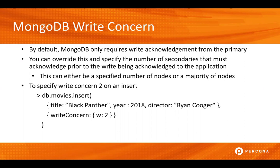If you want to override this, you certainly can. You can do the override by specifying a specific number of nodes, or you can simply say majority, and that gives you a little bit more flexibility if you do look to increase or decrease the number of nodes in your replica set. On the last bullet here, you can see how you could specify a write concern of two on a specific insert. You can also alternatively specify the write concern as a configuration parameter by changing the rsconfig file.